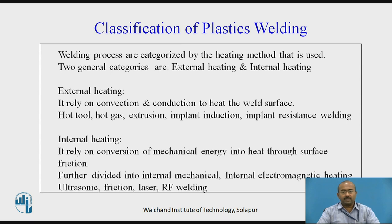The welding process is categorized into two segments: external heating and internal heating. External heating requires heat energy passed through convection and conduction modes. Internal heating involves the conversion of mechanical energy into heat energy through surface friction. Examples of external heating include hot tool and hot gas welding. Examples of internal heating include ultrasonic welding, friction welding, laser welding, and RF welding.